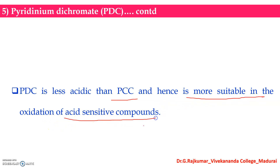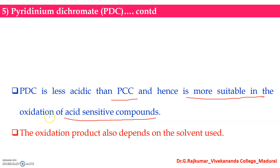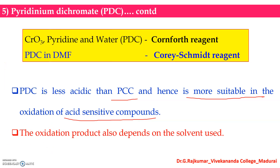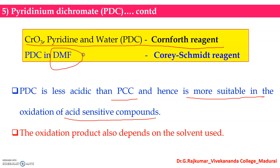PDC is less acidic than pyridinium chlorochromate, and hence PDC is more suitable for the oxidation of acid-sensitive substrates. The oxidation product also depends on the solvent used. Chromium trioxide-pyridine-water is known as the Cornforth reagent, and PDC in DMF (dimethylformamide) is known as the Corey-Smith reagent.